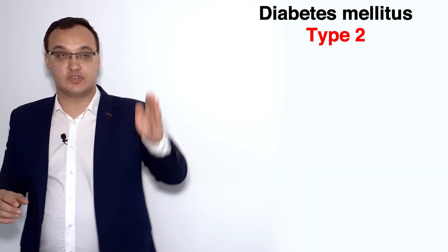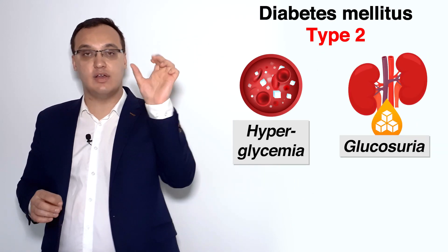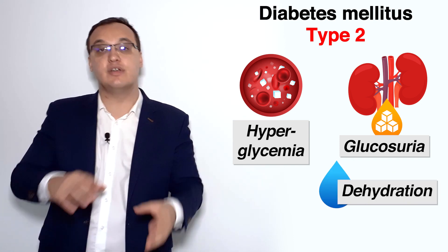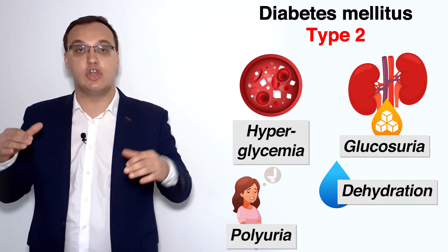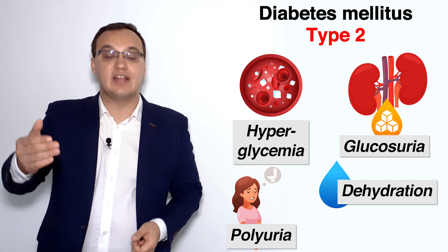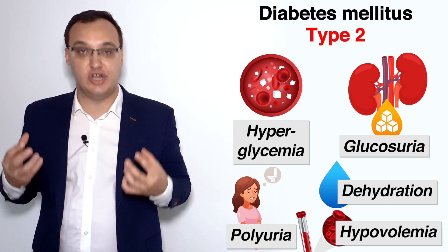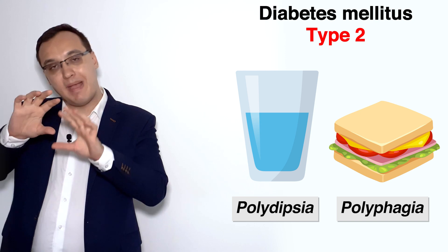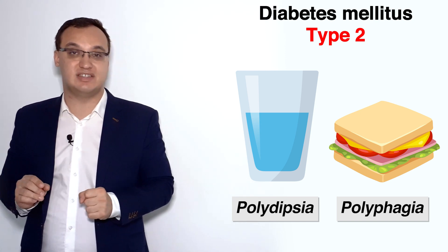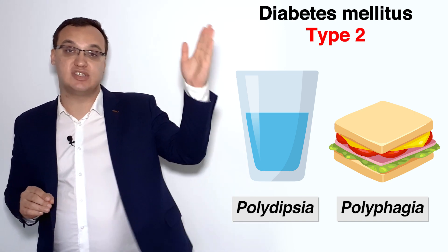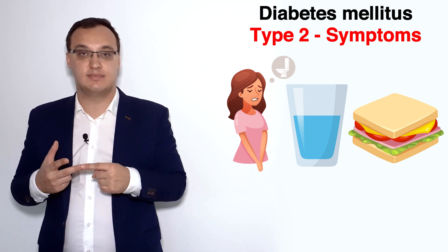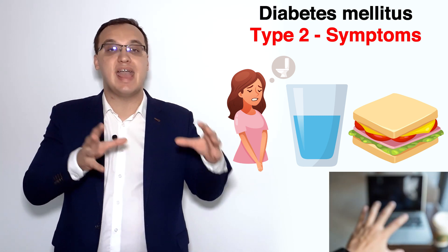To summarize the symptoms: we have hyperglycemia → glucosuria, a high amount of glucose in the urine. Due to that high concentration, water flows into the urine → polyuria, a lot of urination. Due to that we have low blood volume → hypovolemia. And due to that the patient needs to drink and eat a lot → polydipsia and polyphagia. Remember: the symptoms themselves are polyuria, polydipsia, and polyphagia, plus blurred vision and weight loss in some cases.